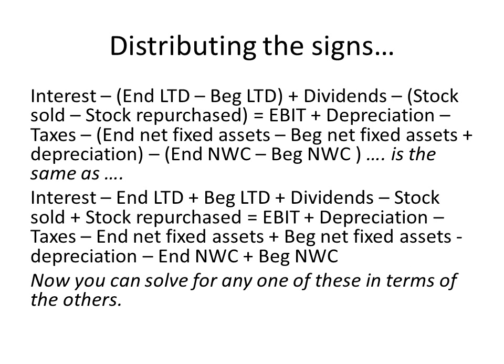Now we'll take that equation and distribute the signs, because with so much in parentheses things can get confusing. We wind up with: interest minus ending long-term debt plus beginning long-term debt plus dividends minus stock sold plus stock repurchase, equals EBIT plus depreciation minus taxes minus ending net fixed assets plus beginning net fixed assets minus depreciation minus ending net working capital plus beginning net working capital. Remember that a minus times a minus is a plus, so distributing a negative sign into a parenthesis flips the sign of each term. With things simplified this way, it's quite easy to solve for any one of these items in terms of the others.